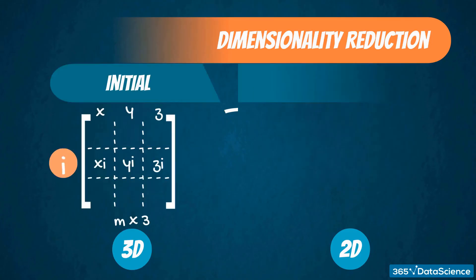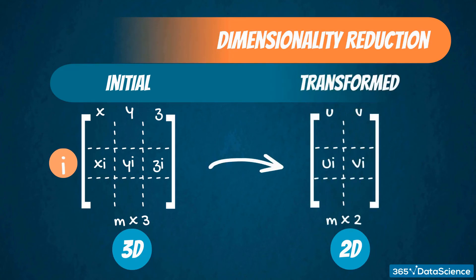Linear algebra provides us with fast and efficient ways to transform our initial matrix from m by 3, where the three variables are x, y, and z, into a new matrix which is m by 2, where the two variables are u and v. In this way, instead of having three variables, we reduce the problem to two variables. In fact, if you have 50 variables, you can reduce them to 40, or 20, or even 10.